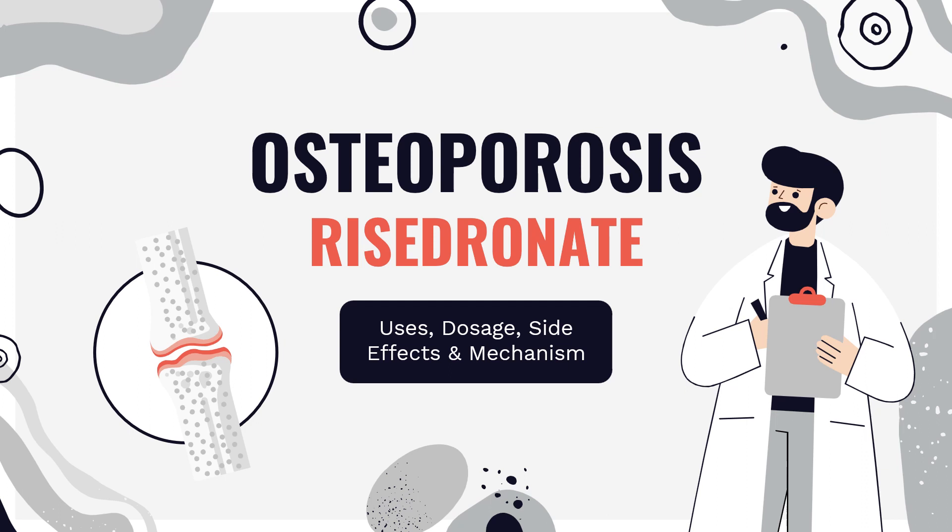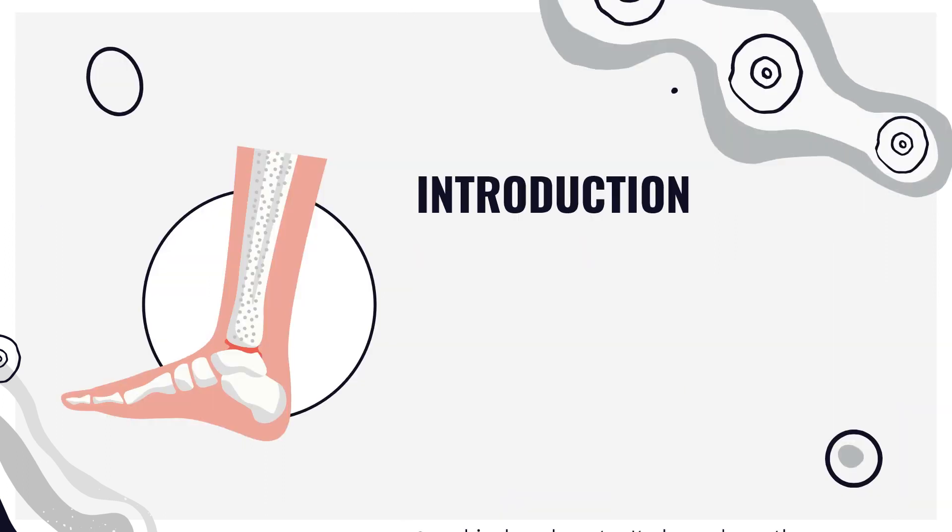Risedronic acid is a bisphosphonate used to treat osteoporosis and Paget's disease. In this video, we'll cover: what is risedronate, what is risedronate used for, contraindications, side effects, how risedronate works, and how to use risedronate.